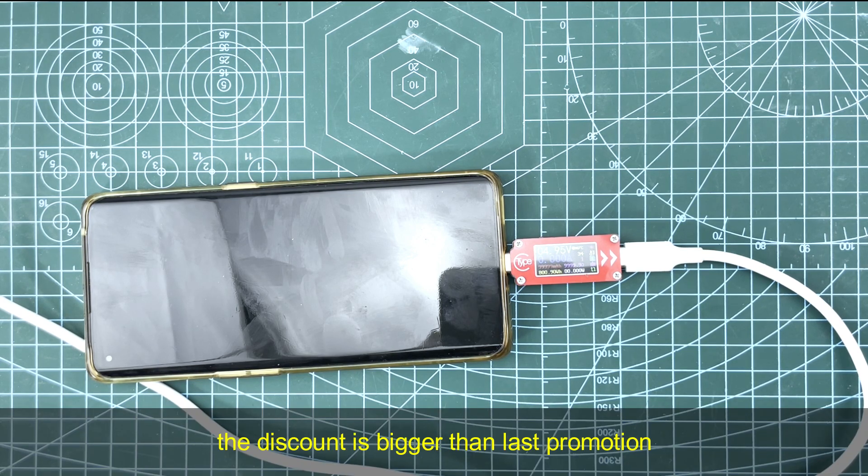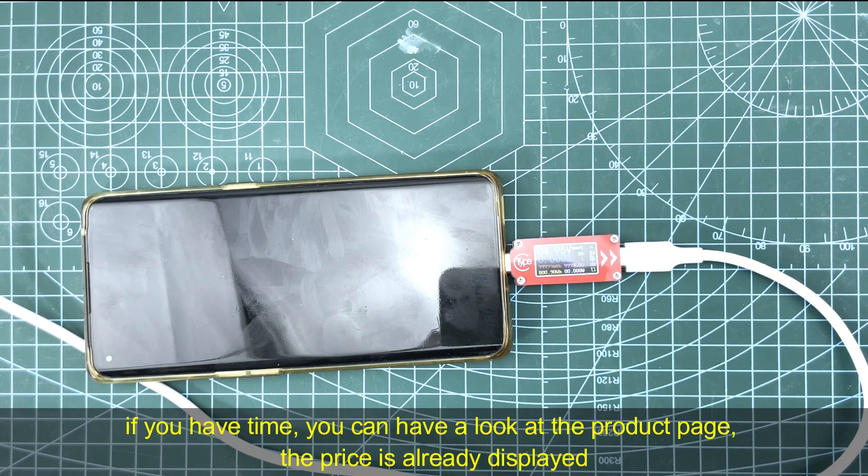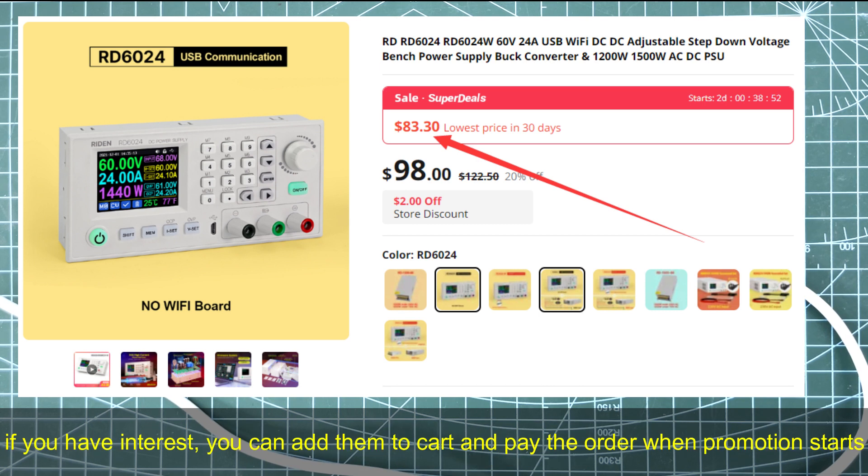The discount is bigger than the promotion last time, so if you have time you can have a look. The product price is already displayed at the product page, and if you have interest, you can add them to the cart and pay together when the promotion starts.